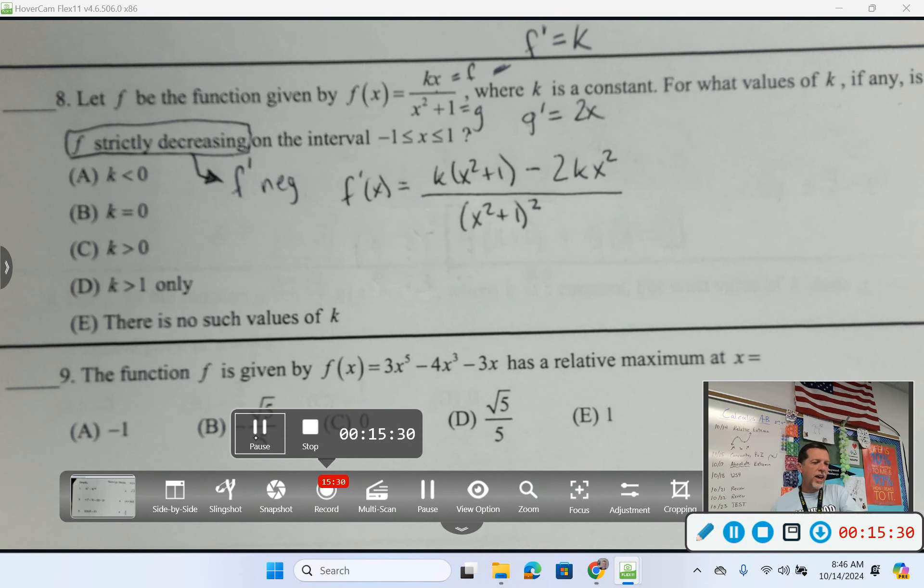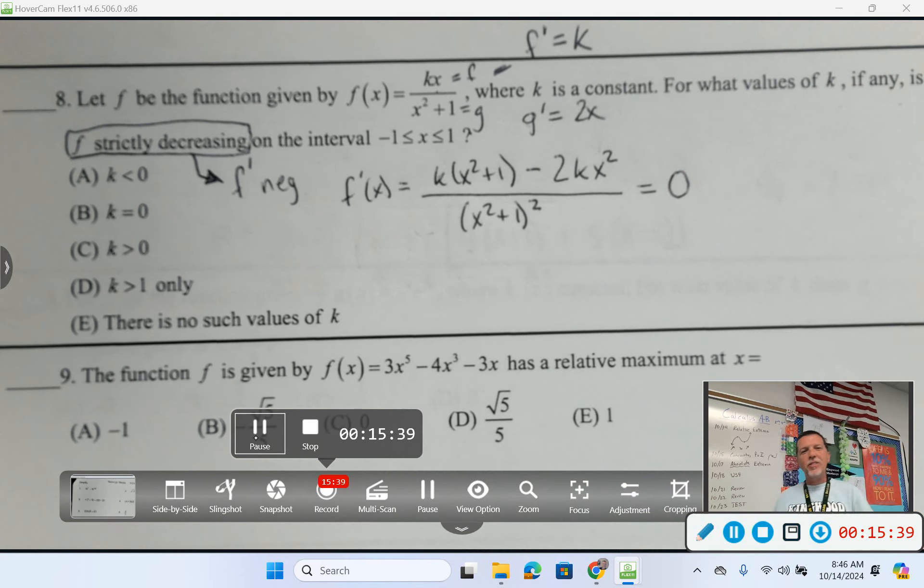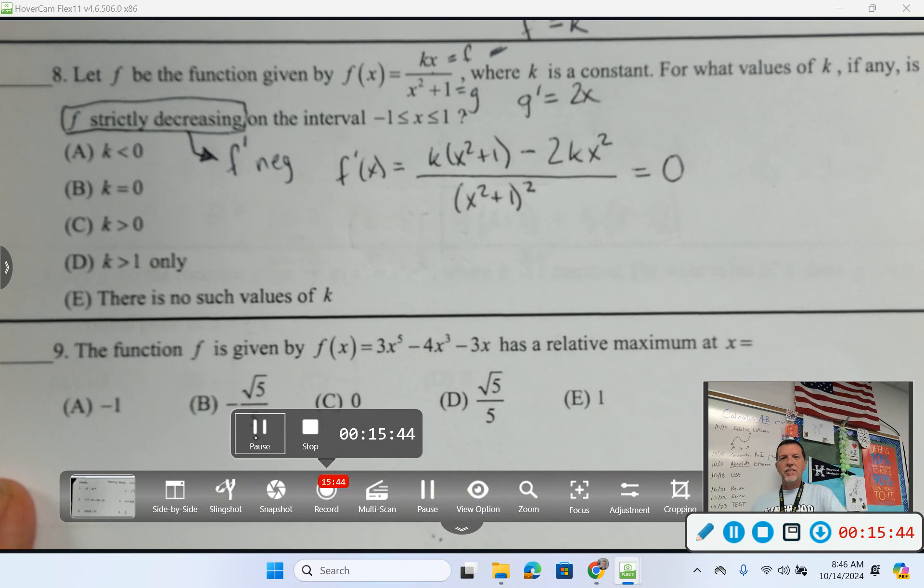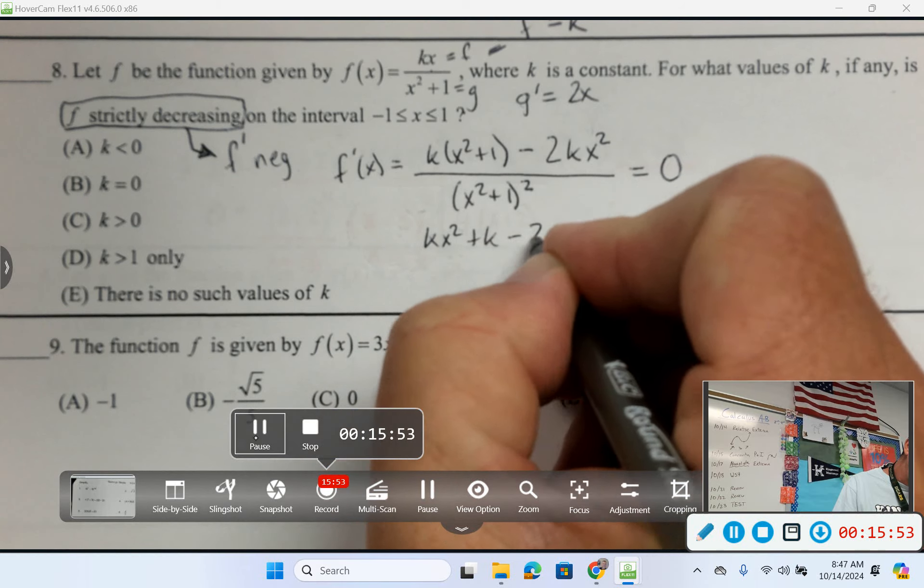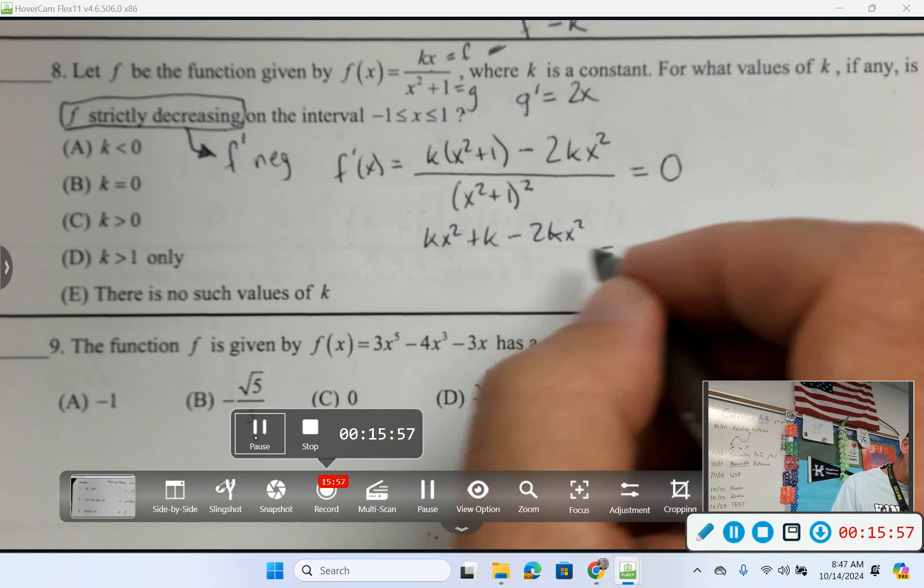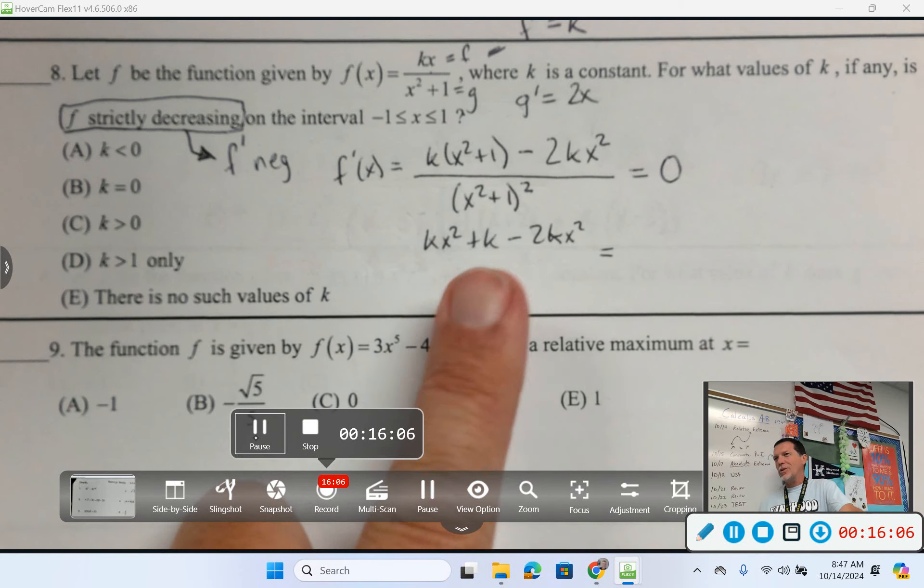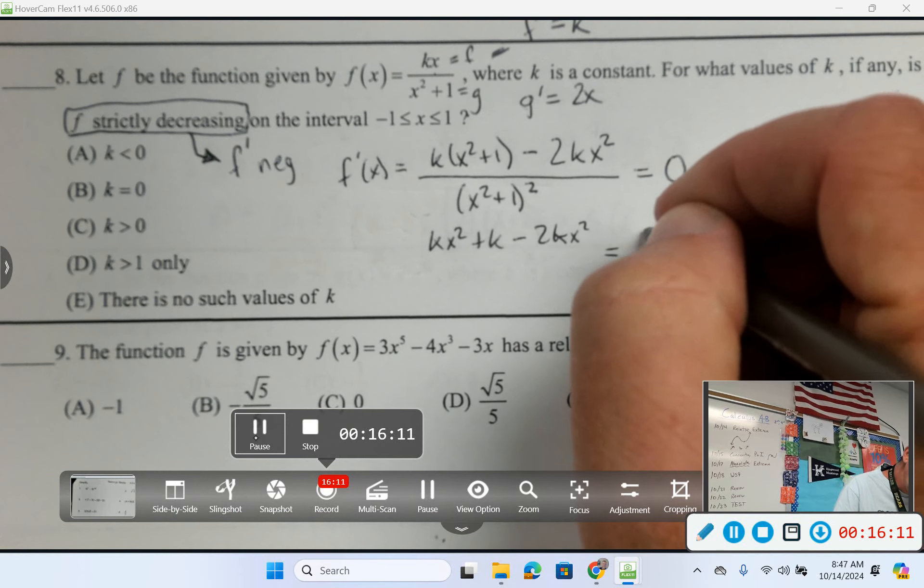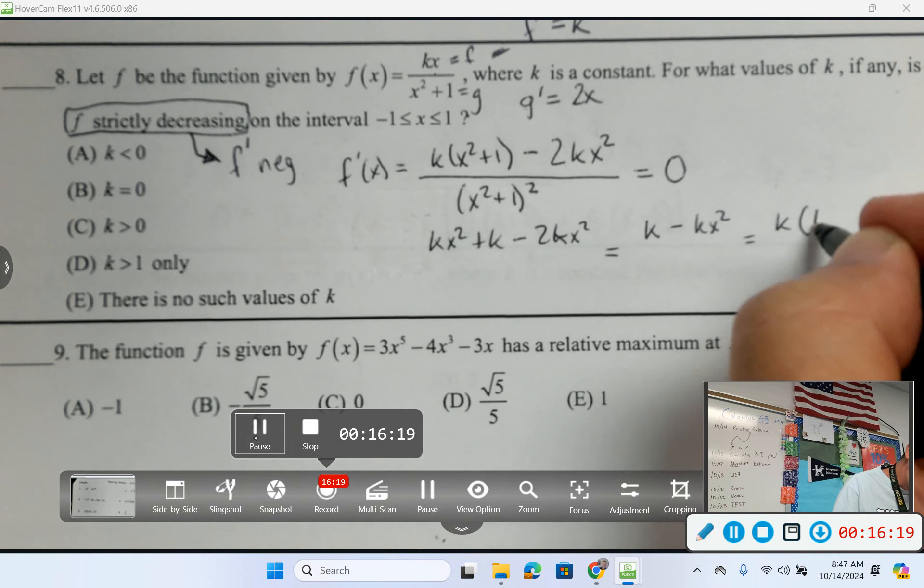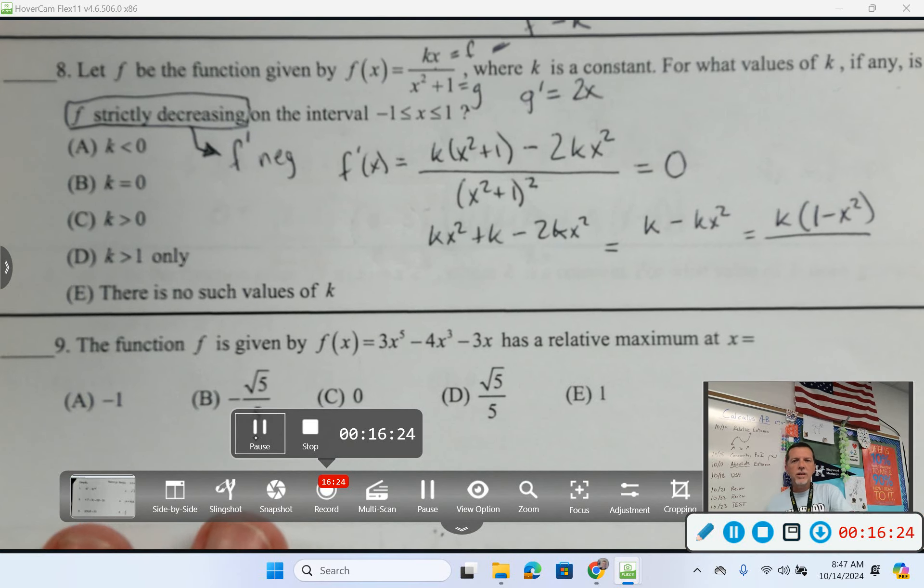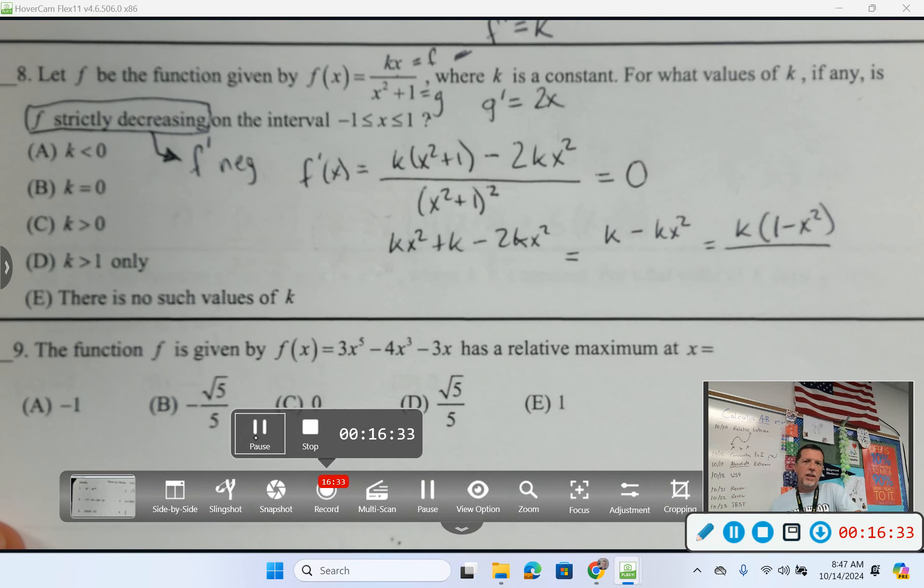And I want to know, or I want to figure out what value of k would make that negative. Well, kind of like the last one. Like, I don't really want to worry about negatives first. So, let's worry about zeros first, and then we'll figure out negatives after that. So, the top would be, let's see, kx squared plus k minus 2k x squared. I'm going to leave the bottom alone, because it doesn't have any k's. It's also always positive. So, it's a quotient rule, but I'm going to be able to ignore the denominator. So, that's at least one small nice thing. So, k minus kx squared. I'm going to factor out the k. 1 minus x squared. Let's see, and the bottom doesn't really matter.